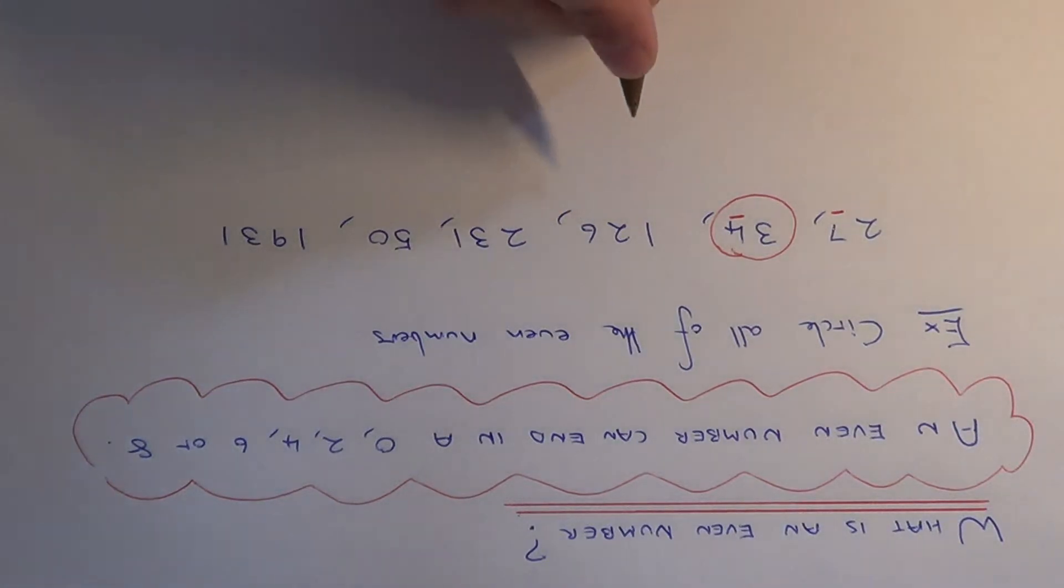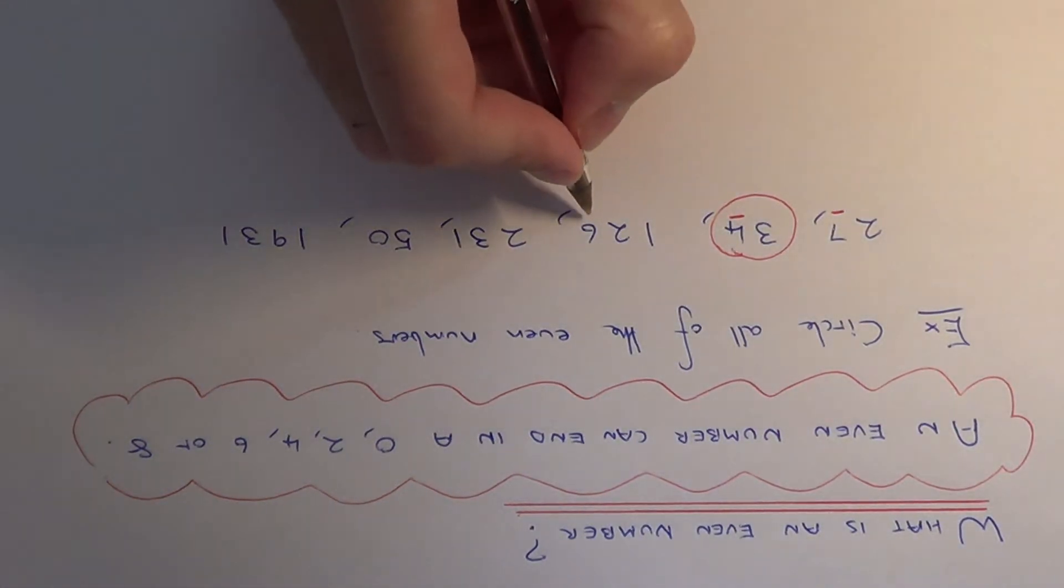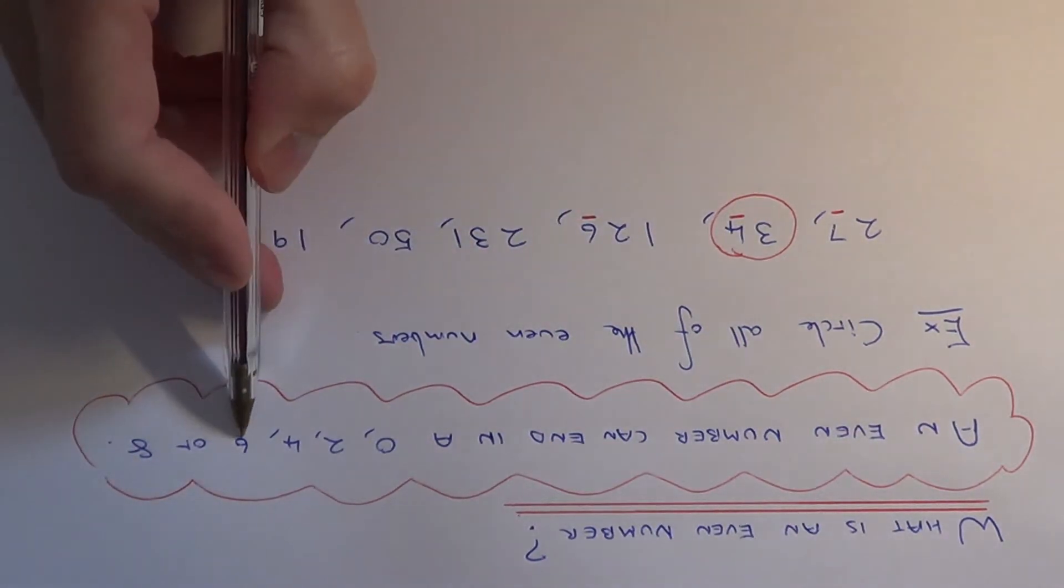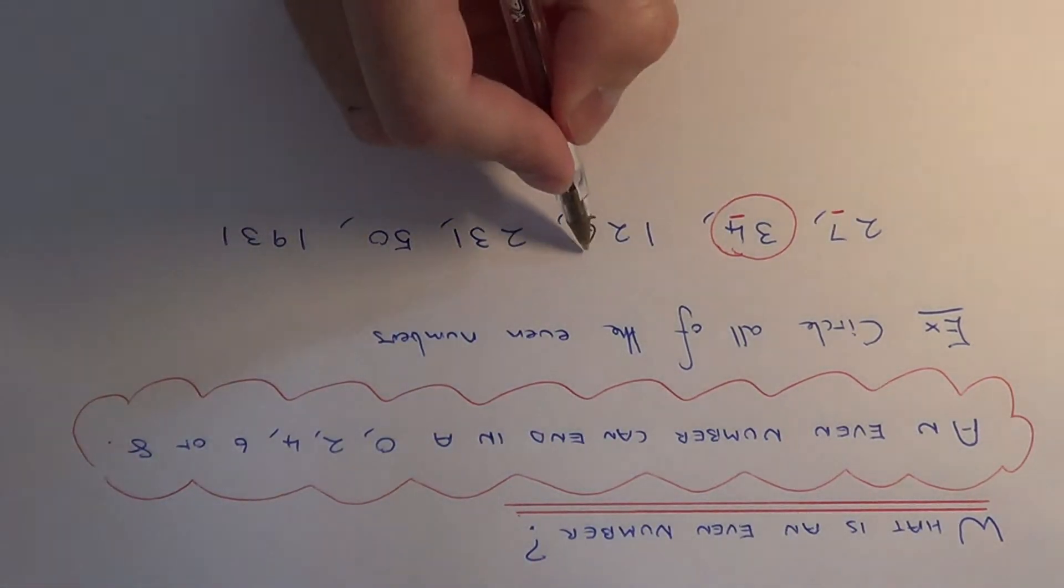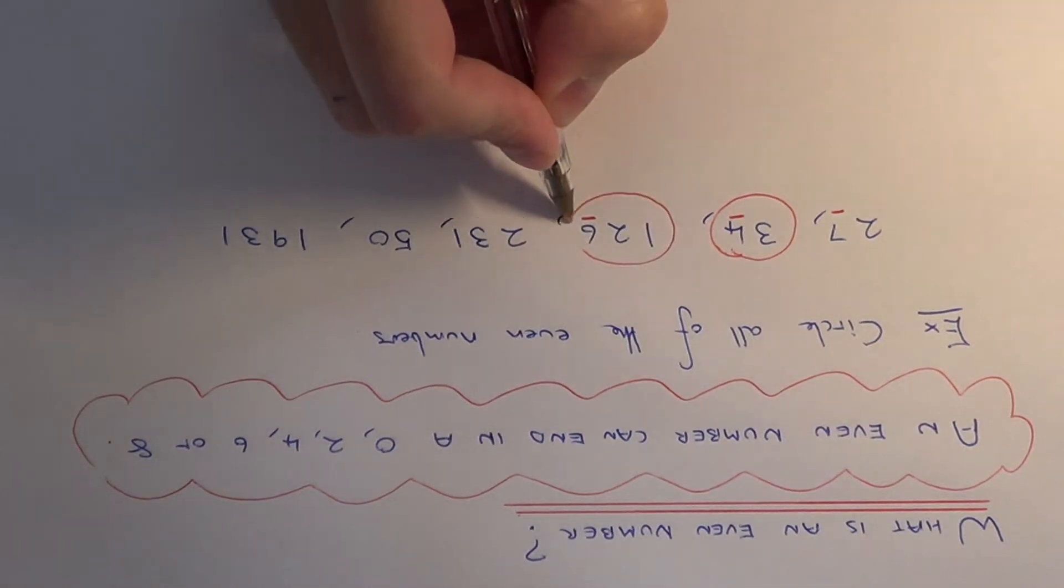Our next number is 126. So again, look at the last digit, which is a 6. So again, you can see it's in the list here. So this is going to be an even number.